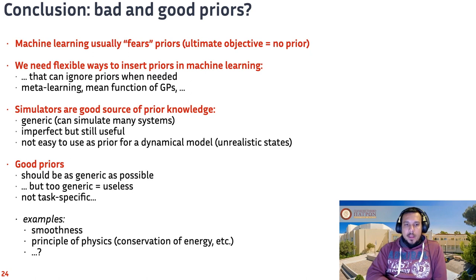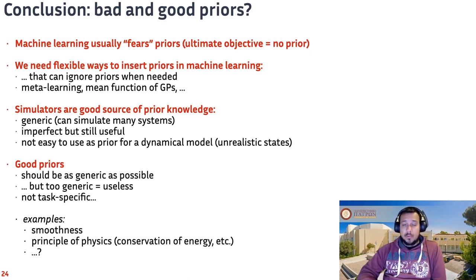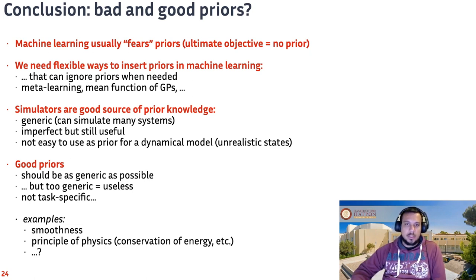Simulators can be a relatively good source of prior knowledge because they are generic — we can simulate a lot of systems. Even if they are imperfect, they can be insanely useful, as we saw in this talk. However, using simulators as a prior for a full dynamical model with contacts and collisions can be hard due to practical issues. Good priors should be as generic as possible, but if they are too generic they become useless because they stop helping us accelerate learning. We also need them to not be too specific, because we would like to use them across many different tasks and contexts.